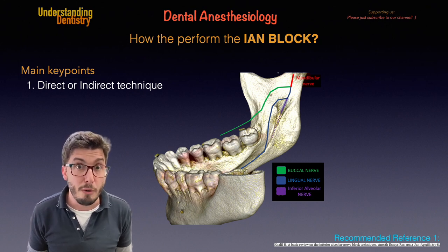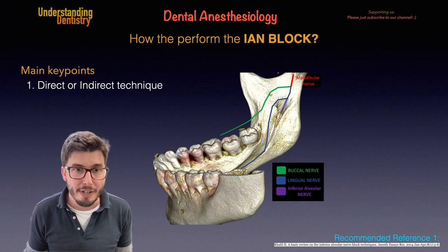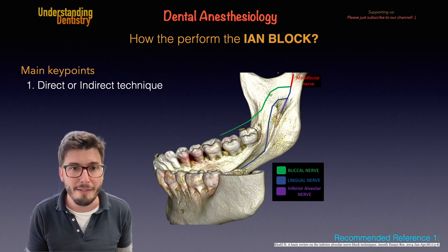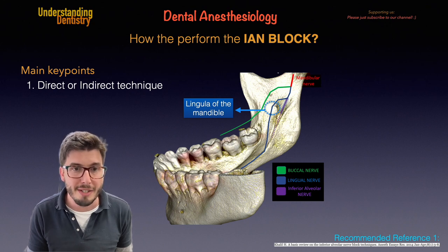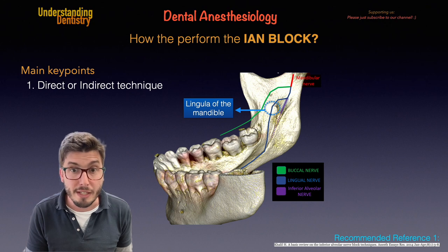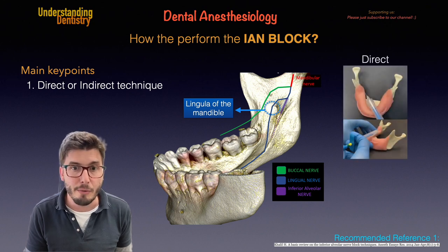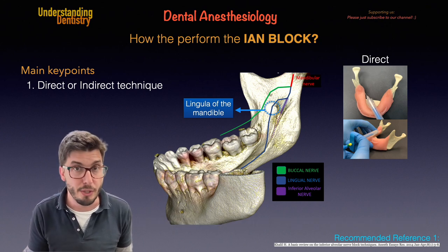We are going to start with the direct technique, and first I want you to notice this anatomical landmark which is the lingula of the mandible. That's basically a sharp bony projection, and we actually need to deviate from this projection in order to target the inferior alveolar nerve block. We need to take this into consideration, and then the position goes from the premolars of the other side with all the angles that you already know.